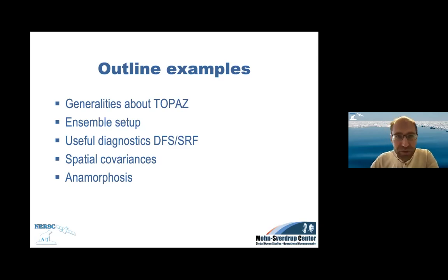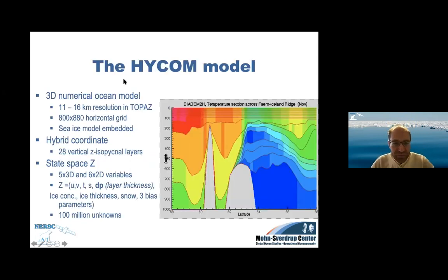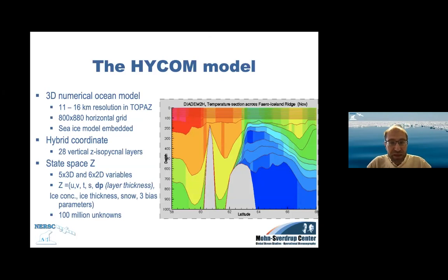Let's start with a few generalities about TOPAZ. TOPAZ has been built around the HICOM ocean model, which is a three-dimensional ocean model. In our forecasting configuration it has 11 to 16 km resolution horizontally, making 800 by 880 horizontal grid cells. There's a sea ice model in there, and the vertical coordinate is a hybrid coordinate, so the water is discretized in the vertical as shown in this section done by Gair more than 20 years ago.